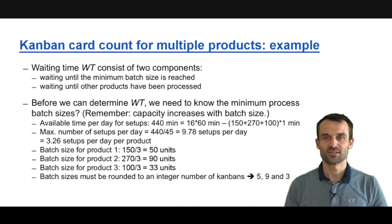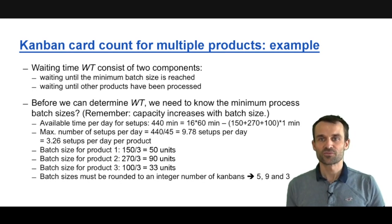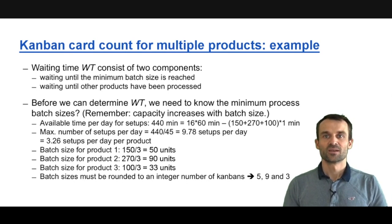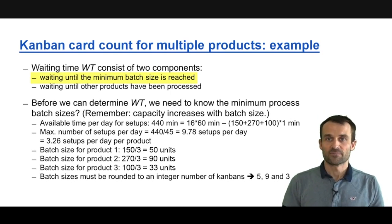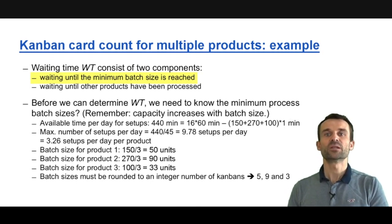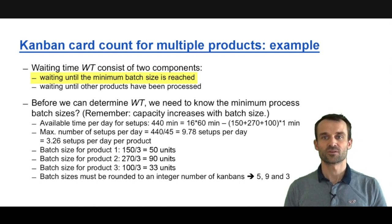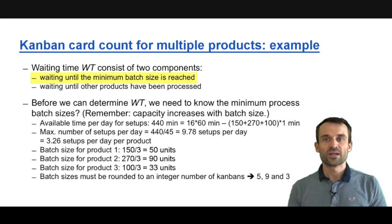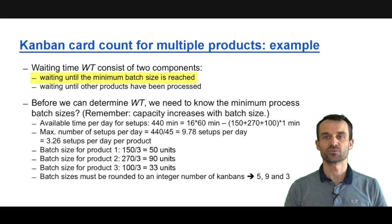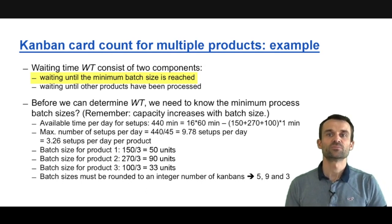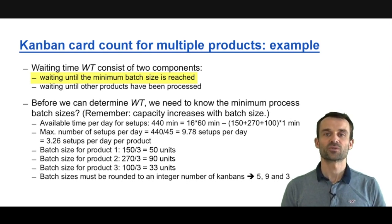Waiting time consists of two elements. First, there's waiting time until we reach a minimum batch size. Because of the setups, there will be a minimum batch size for each product, and that may correspond to more than one Kanban card. Sometimes we'll have to wait until we have two, three, or even more Kanban cards before we're allowed to produce, because we need to reach that minimum batch size.